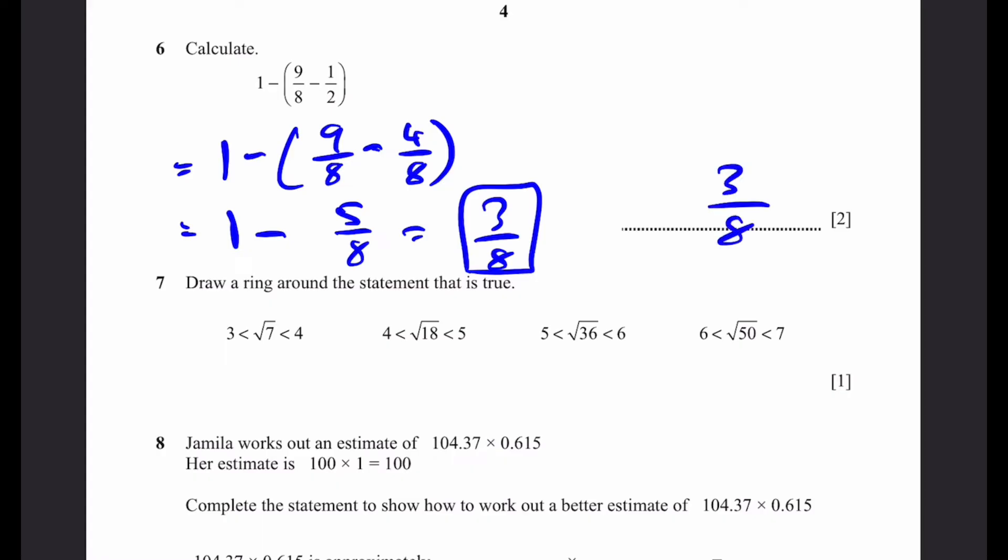Question 7. Draw a ring around the statement that's true. 3 less than root 7 less than 4. This is wrong. Since 3 is the square root of 9, 4 is the square root of 16. Square root of 11 is less than square root of 9, but they're writing that it's greater than. And therefore, this is wrong. 4 less than root 18 less than 5. 4 is root 16, 5 is root 25. 18 is in between 16 and 25. So when you square root all three, it'll still be the same. So this is the correct option.